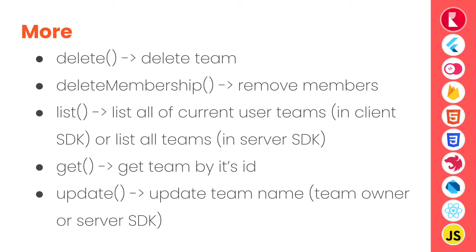The Teams API has some more functions. The delete function requires a team ID to delete the team. Delete membership requires a team ID and user ID to remove a member. The list function from the client SDK lists all of the current user's teams, whereas from the server SDK it lists all teams in the project. Get retrieves a team by ID — a logged-in client user can only get a team if they are a member. The update function updates the team's name and can only be performed by the team owner or server SDK.